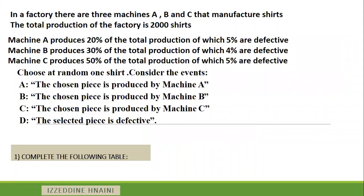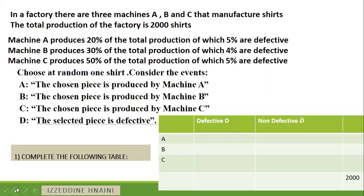Consider the events. We choose one shirt at random. Event A: the piece is manufactured by machine A. Event B: the chosen shirt is produced by machine B. Event C: it is produced by machine C. Event D: the selected piece is defective. Make a pause on the video and try to complete this table.